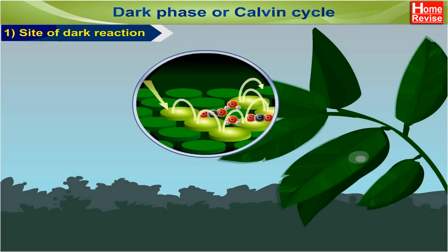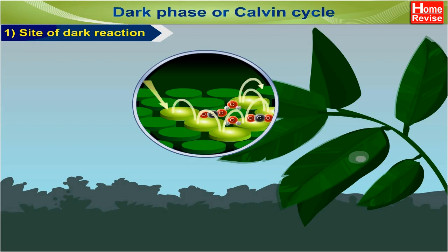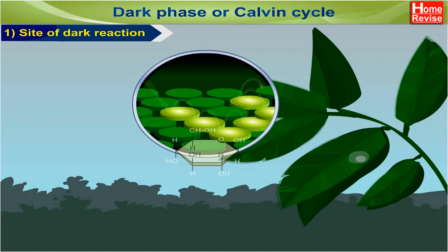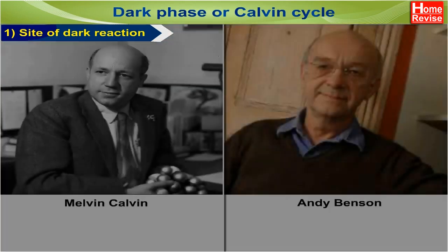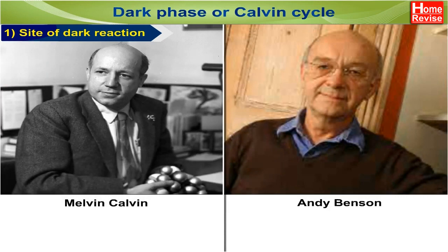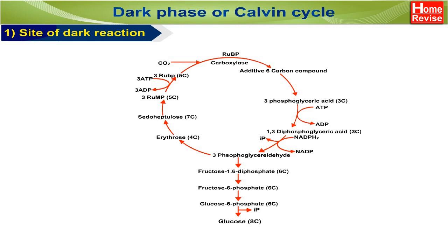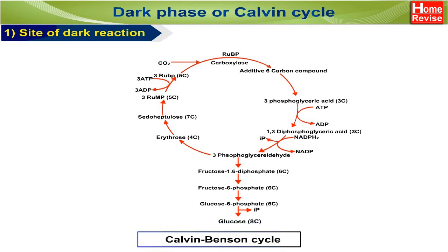During the biosynthetic phase, carbon dioxide fixation occurs by a series of enzyme-catalyzed steps and carbohydrate, i.e. glucose, is synthesized. These reactions were discovered by Melvin Calvin and Andy Benson. Therefore, the biosynthetic phase is called the Calvin-Benson Cycle.